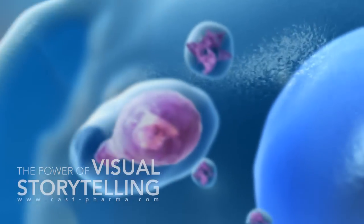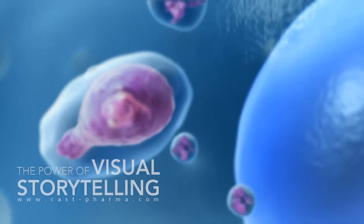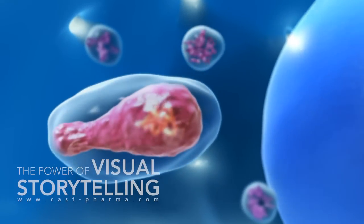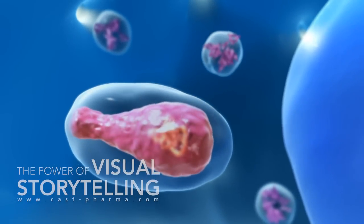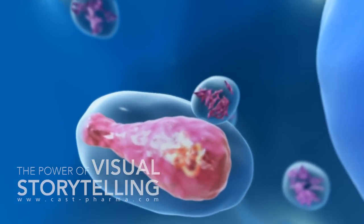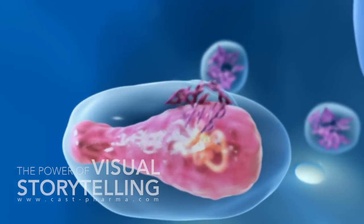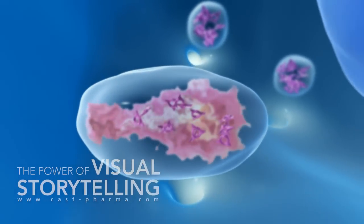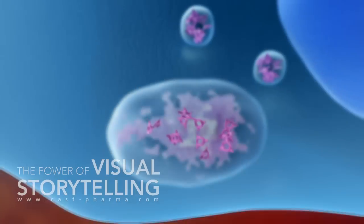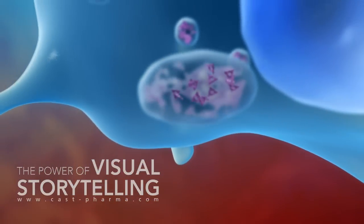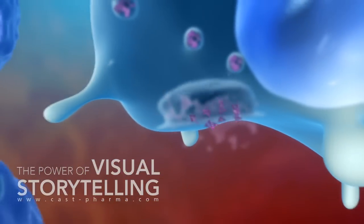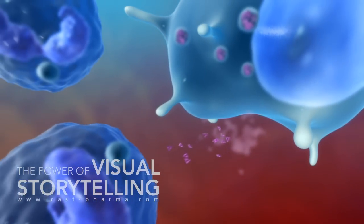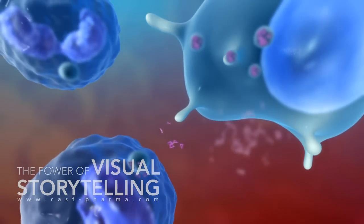Macrophages and heterophils quickly identify the mycoplasma as foreign invaders. Tilmykocin can now destroy the pathogen. It is then taken up by other immune cells and used again.